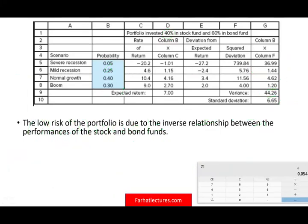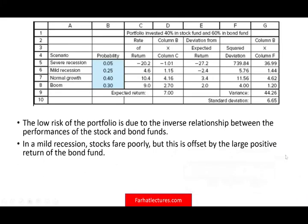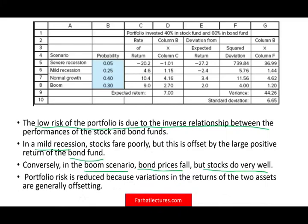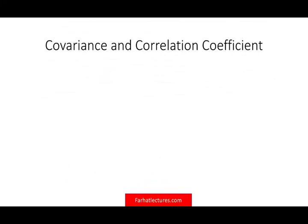The low risk portfolio is due to the inverse relationship between the performance of bonds and stocks. In a mild recession, stocks fare poorly, but this is offset by a large positive return in the bond fund. Conversely, in a boom scenario, bond prices fall while stock prices do very well. Portfolio risk is reduced because the variation in returns of the two assets are generally offsetting. This is the benefit of diversification when the two securities don't work in the same way.